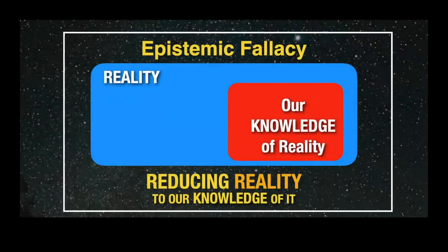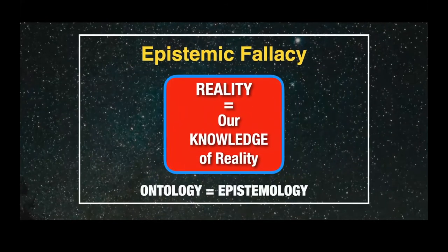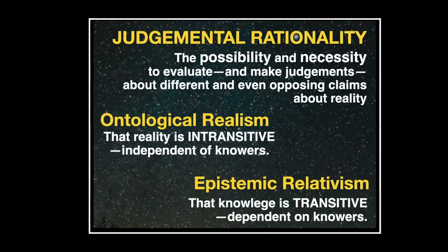By making this distinction between the intransitive world and the transitive enterprise of science, Roy warns us against the epistemic fallacy — the tendency to reduce reality into our knowledge of it. In the diagram, the blue rectangle stands for reality, and our knowledge of reality is limited — the red rectangle. Epistemic fallacy is conflating the two so that ontology equals epistemology. This is what happened in modern philosophy. To see how this applies to us — sometimes in a relationship we tend to reduce the reality of the person to our knowledge of that person. That's where trouble begins.